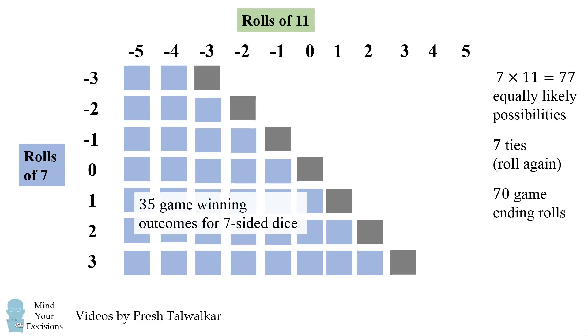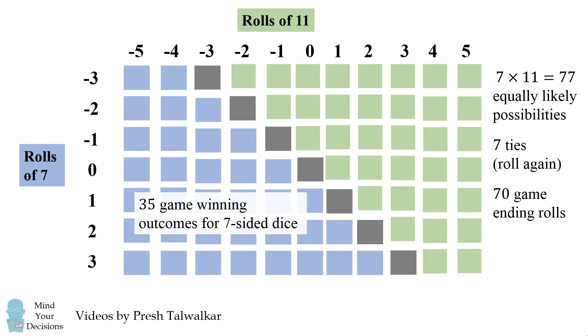This is a total of 35 game-winning outcomes for the seven-sided dice. All of the possibilities to the right of the diagonal will be wins for the 11-sided dice, and this will be a total of 35 game-winning outcomes for the 11-sided dice.